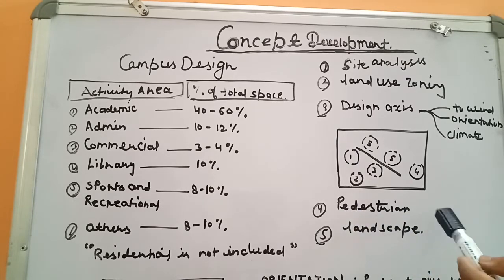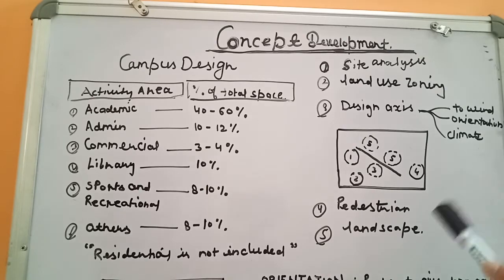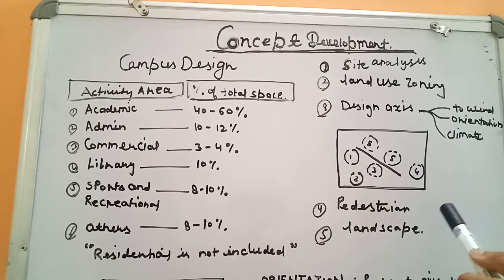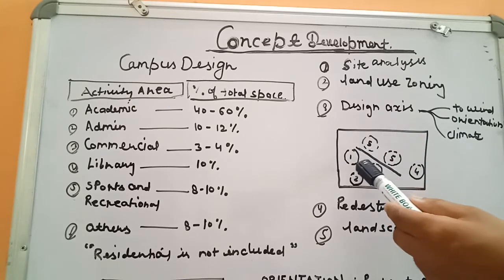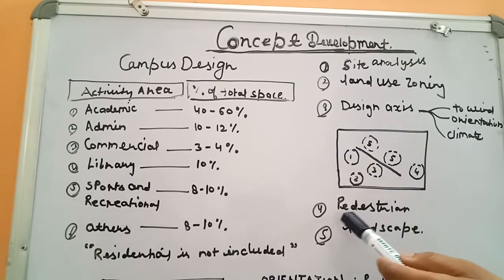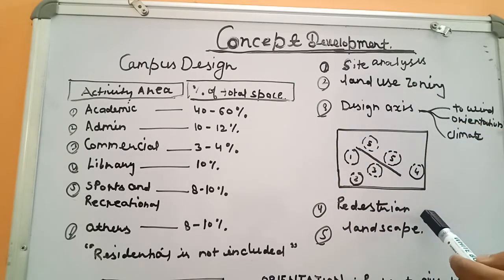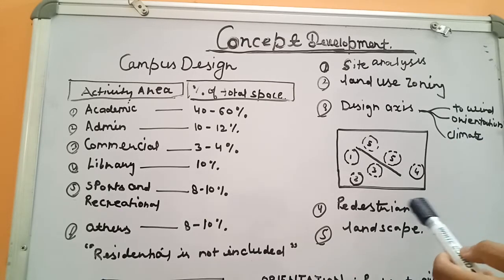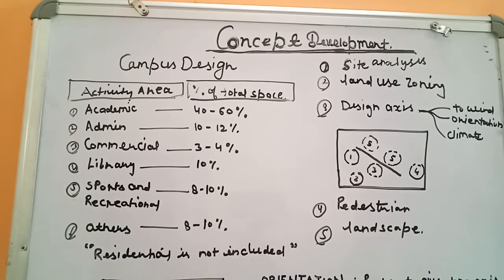Pedestrian movement is considered most important for any campus design. Pedestrians define the function and connect all the complexes and blocks within a site. The pedestrian system also determines what type of circulation concept we follow and how we can make movement efficient, avoiding long pathways or long journeys from one block to another.